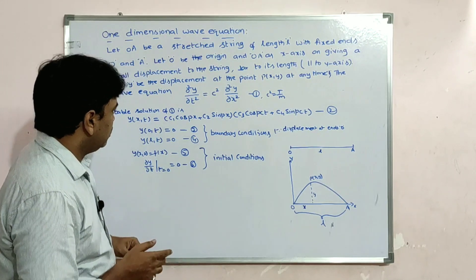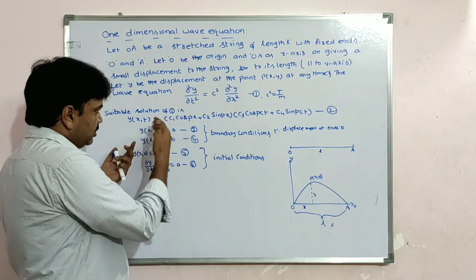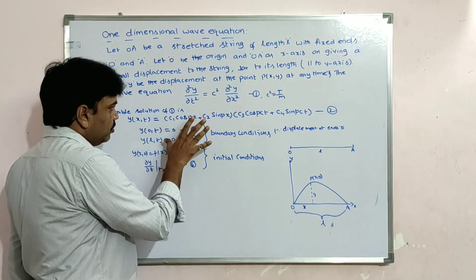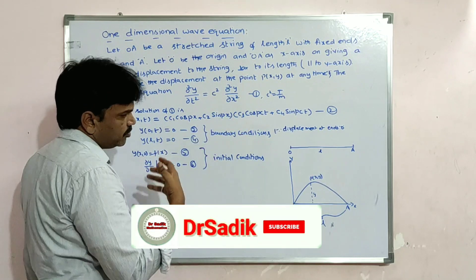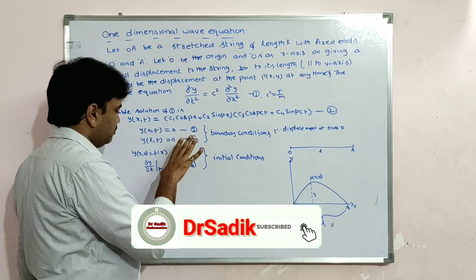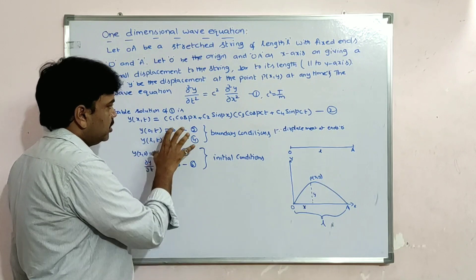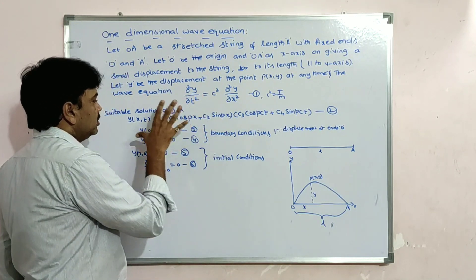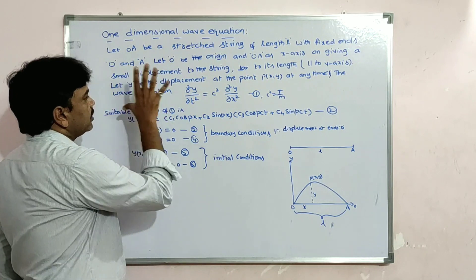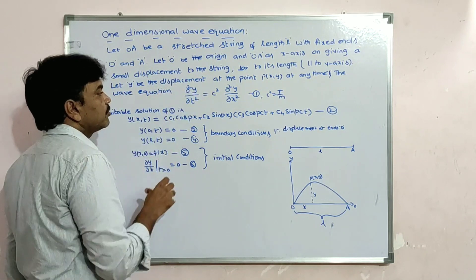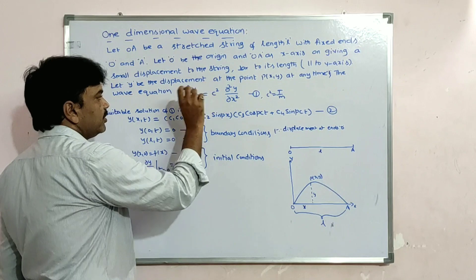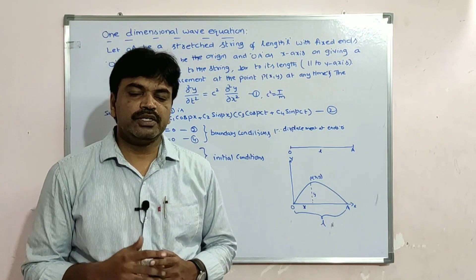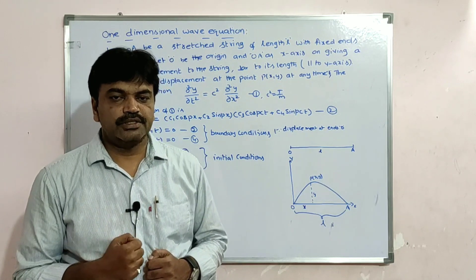Now substitute these conditions. First apply y(0, t) = 0 and y(L, t) = 0 to find the values of c1, c2, c3, c4 — sometimes they may be zero, sometimes we get values. Apply all conditions to find the arbitrary constants and substitute back to get the final solution of the given equation.